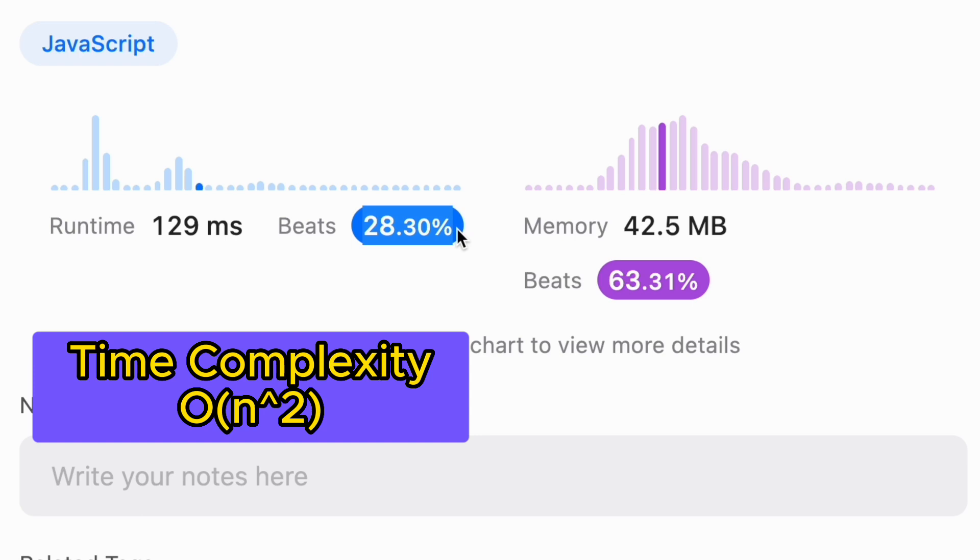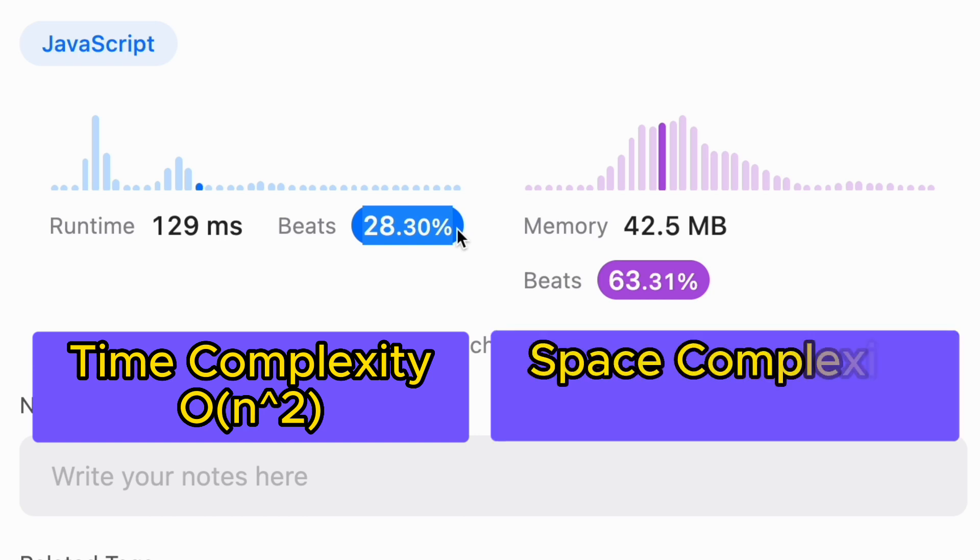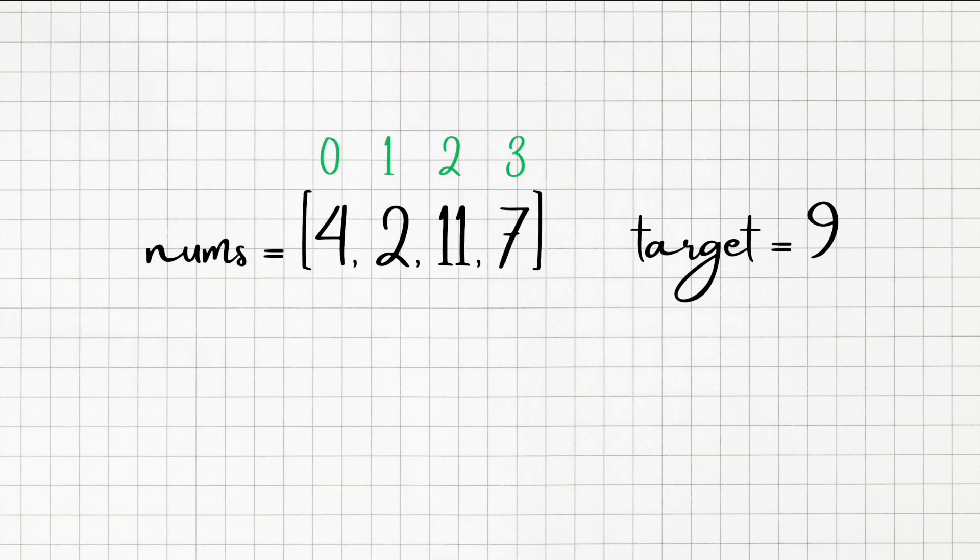Where n is the number of elements in the array. This approach is not ideal for large datasets. However, the space complexity remains O(1).